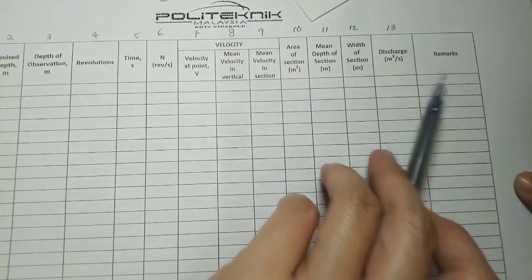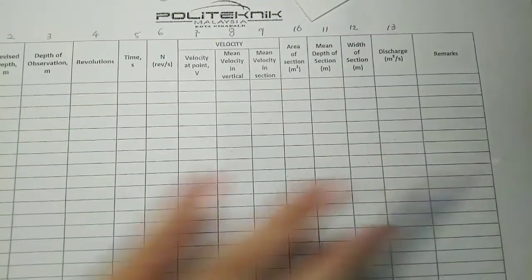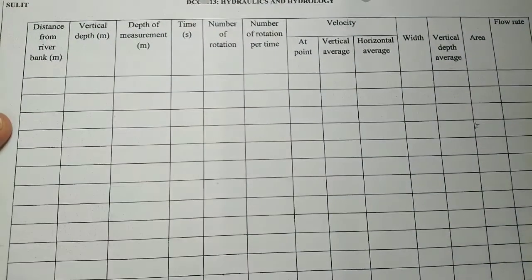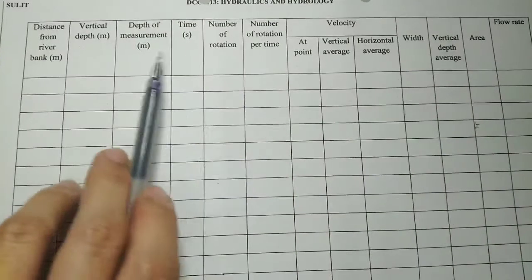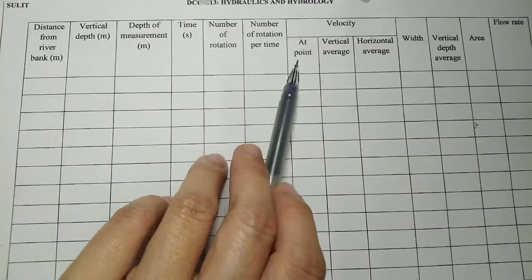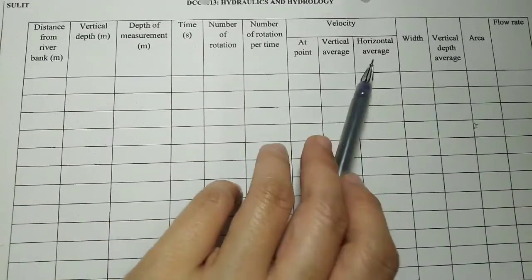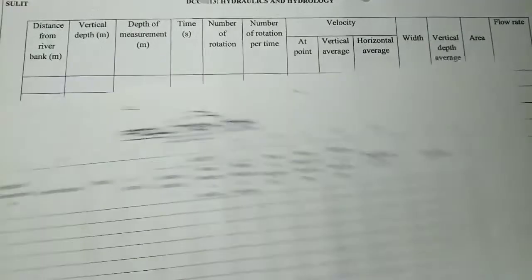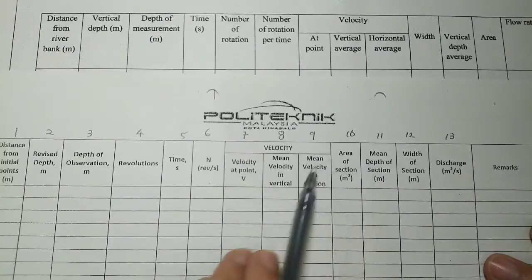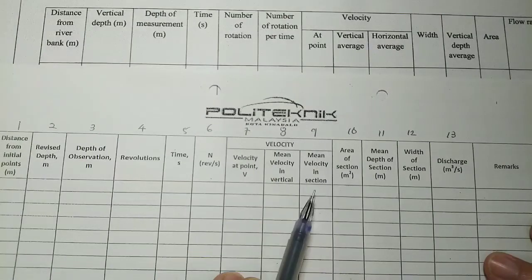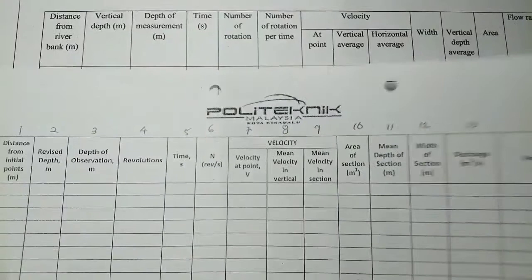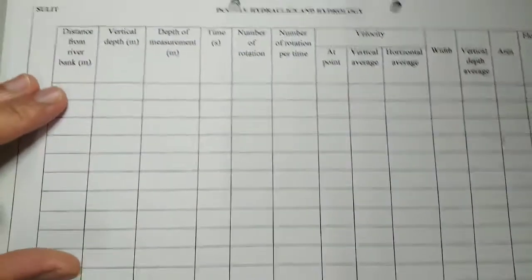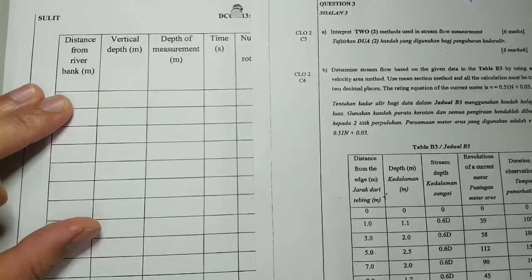There will be a remark at the back, which you will put in the sections. This is another type. The keywords are sometimes different — for example, 'point vertical average' or 'horizontal average' — but usually it will be stated as 'mean velocity in sections'. This is from the previous video; today we are going to use the other type of table.